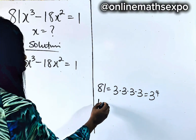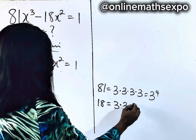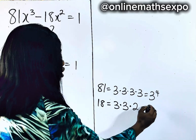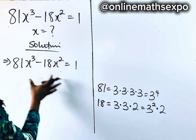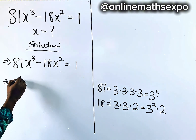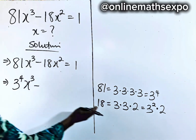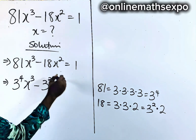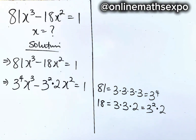And 18 is the same as 3 multiplied by 3 multiplied by 2. So it means we are having 3 raised to the power of 2 times 2, which gives us 18. So let's apply this here. That gives us, for 81, we are going to have 3 to the fourth power times x cubed, minus for 18, we have 3 squared multiplied by 2, then x squared, is equal to 1.